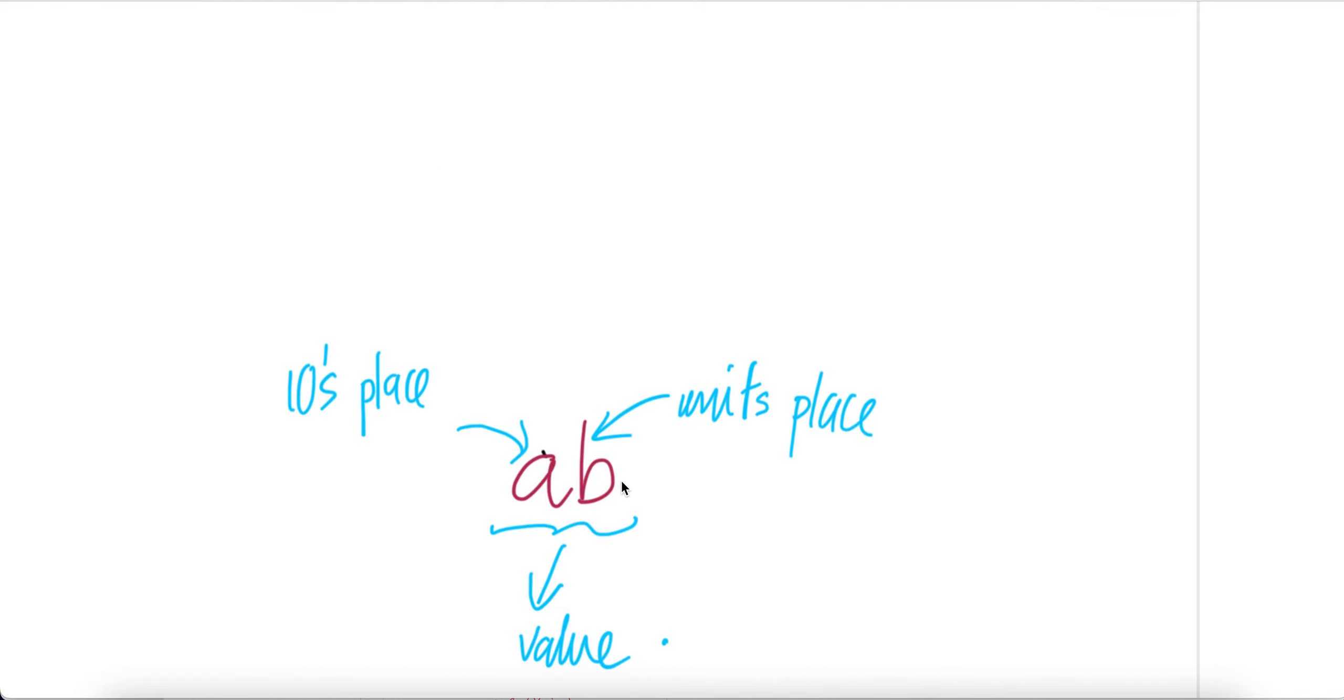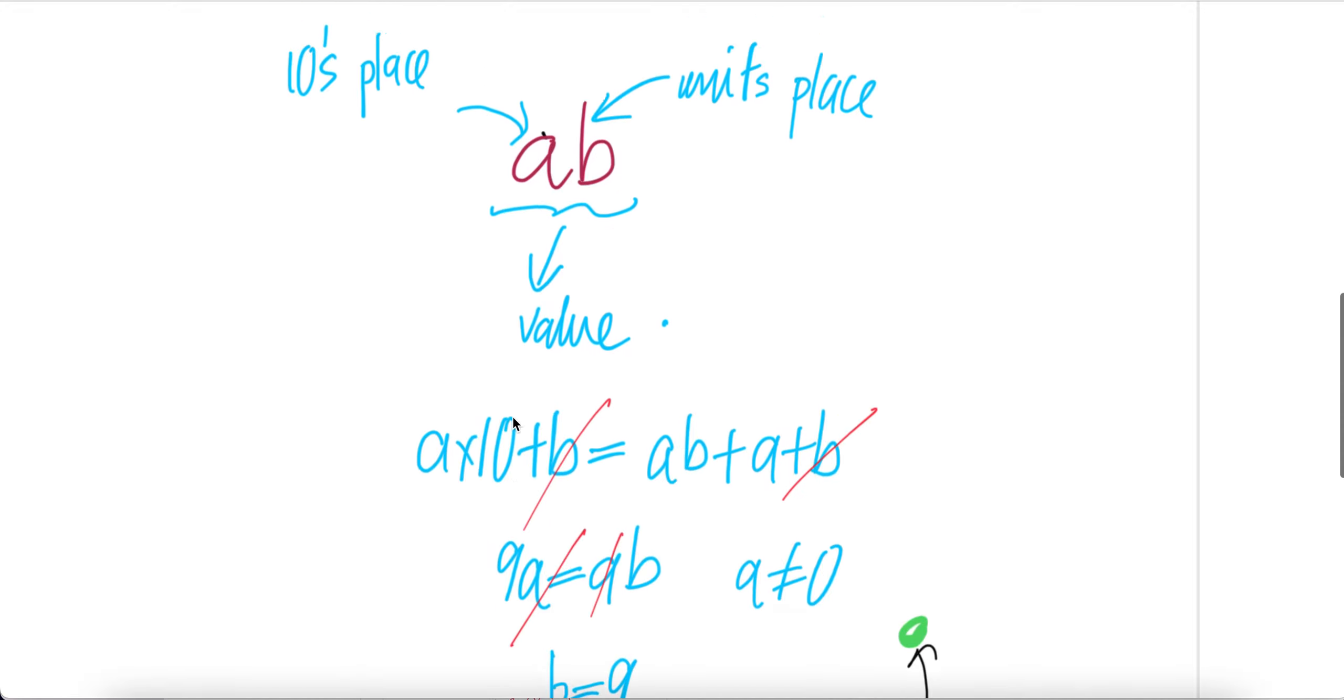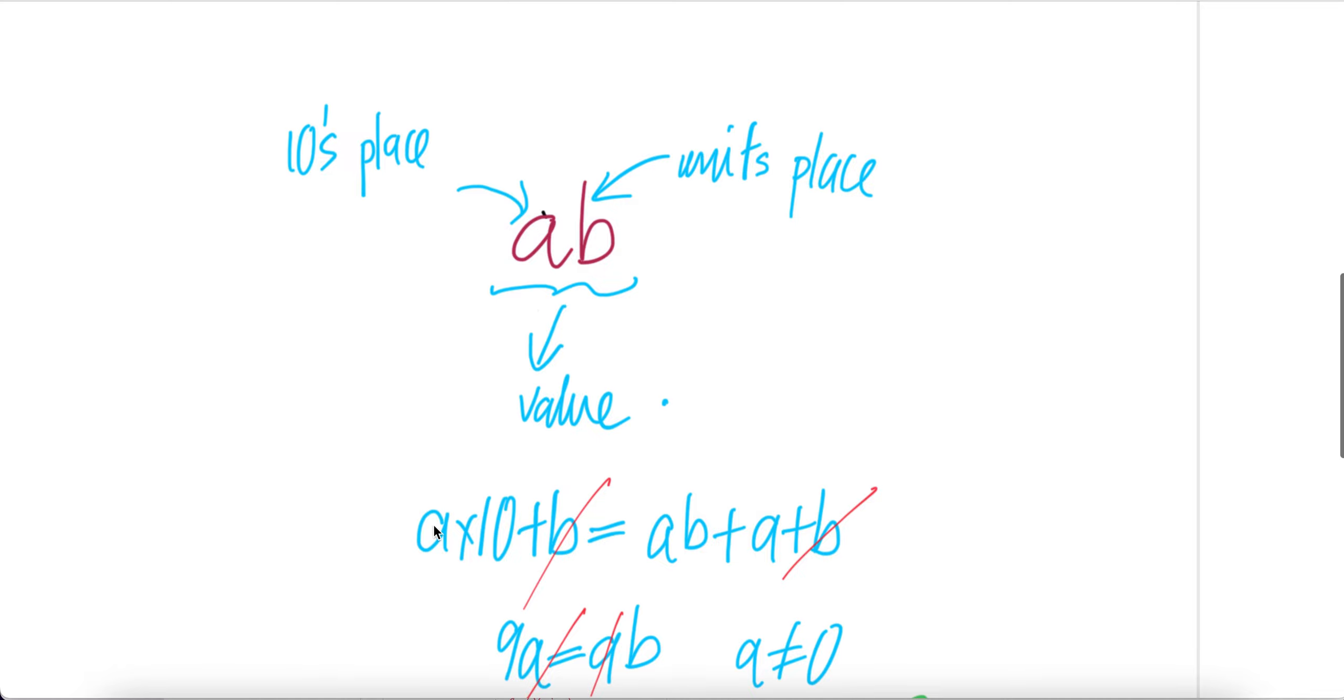Let AB be the number, B be the unit place, and A be the tens place. So the value of this is A times 10 plus unit place B times 1, which is B. Given that it is equal to the product of the two digits and the sum of the two digits...